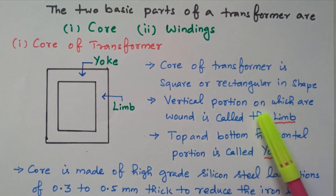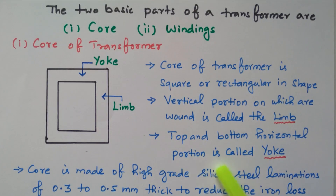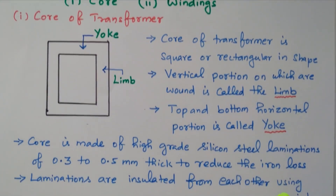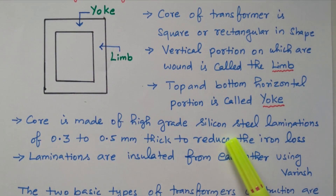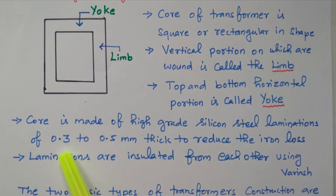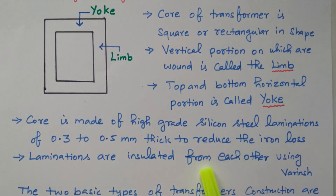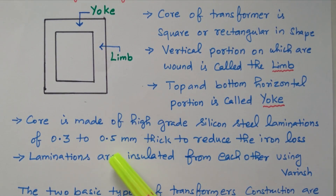The vertical portion on which the winding is wound is called the limb. The top and bottom horizontal portion is called the yoke. The core is made of high grade silicon steel laminations of 0.3 to 0.5 millimeter thickness — very thin sheets to reduce the iron loss. The laminations are insulated from each other using varnish, then compressed together.